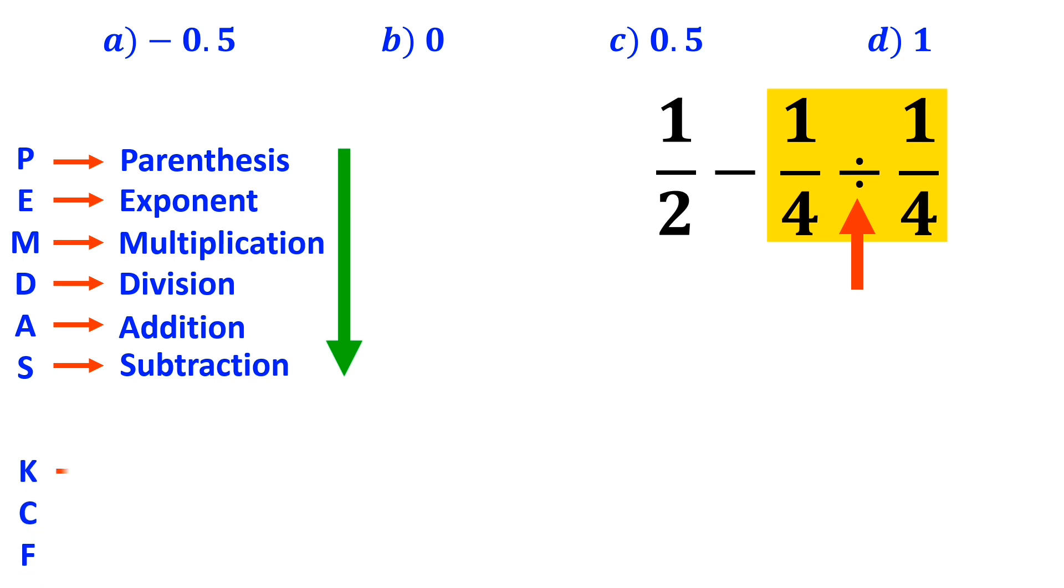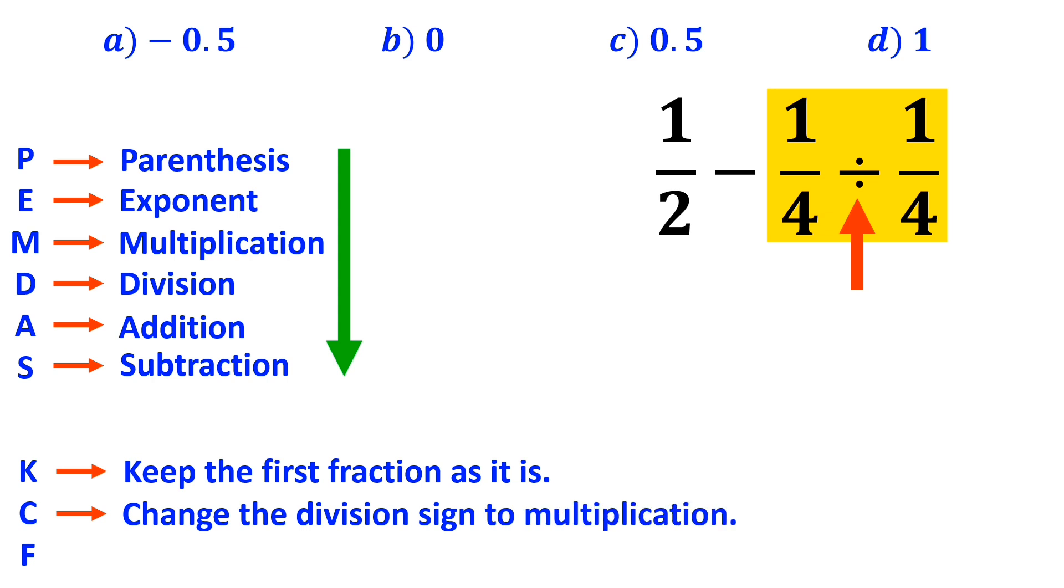In this rule, K stands for keep the first fraction as it is, C stands for change the division sign to multiplication, and F stands for flip the second fraction. So we remove the expression highlighted in yellow and replace it with one-fourth multiplied by four over one.